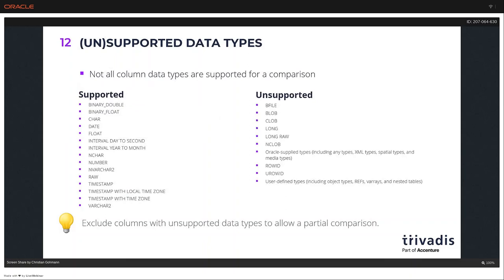This feature has some limitations, which I will discuss when talking about how the comparison works in the background. The most common data types are supported, like CHAR, VARCHAR2, and NUMBER. But large object types like BLOB, CLOB, LONG, and NCLOB are not supported. When you need to compare large object types, you can use the DBMS_LOB package and its compare procedure. When you have a table with unsupported data types, you can still compare it, but you have to exclude all columns with unsupported types — this is called a partial comparison.